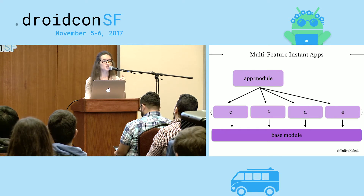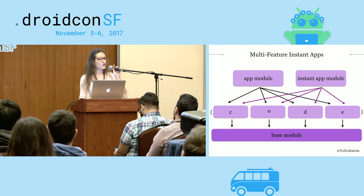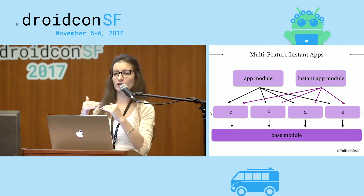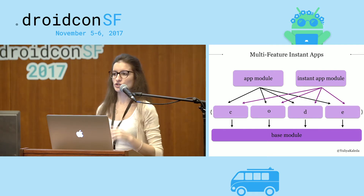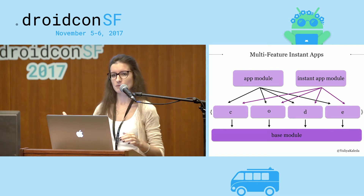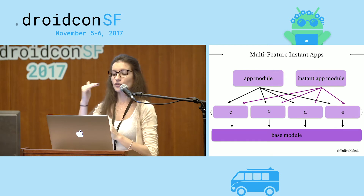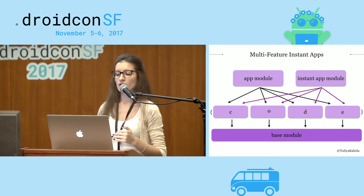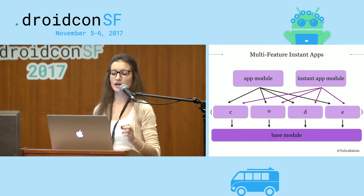The bottom-level Base Module is the shared repository of logic pulled into feature modules — networking layer, account management, analytics, and whatever is shared between all components. Feature modules are independent components responsible for specific business logic. The third-level modules — App Module and Instant App Module — will be empty, without any resources or source files. They're just responsible for building either our regular installable APK or the Instant App. Now let's look at the build.gradle files and connections between the different modules.